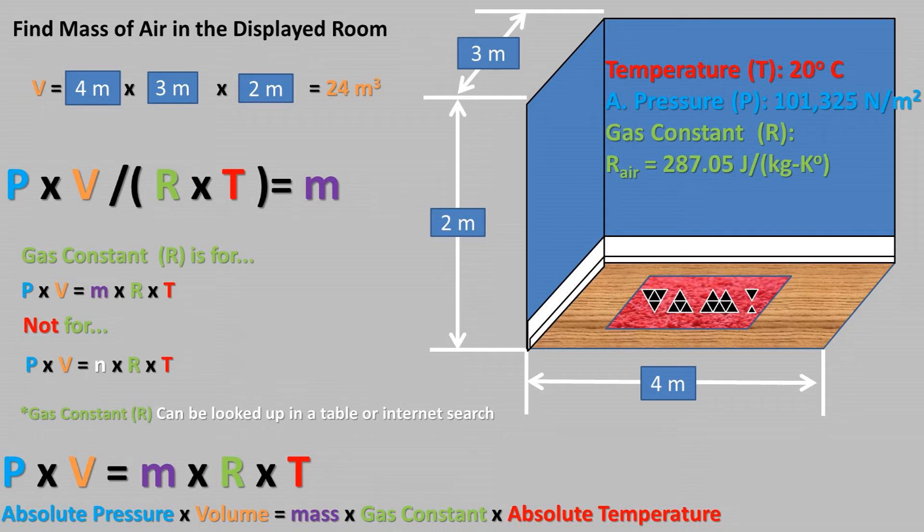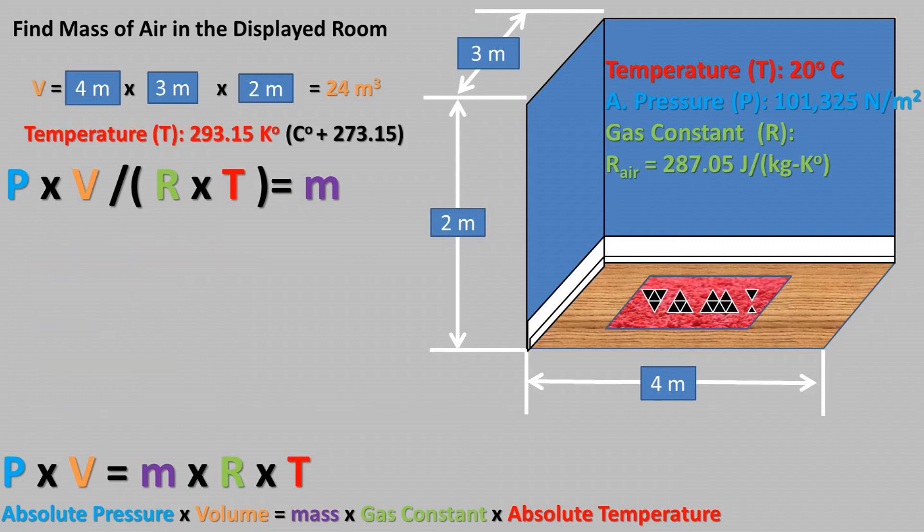We are using the gas constant shortcut for the mass version of the ideal gas law, so we don't have to do any changes to the gas constant. To get the temperature to the correct unit of Kelvin, we can add 273.15 to the Celsius measurement of 20 degrees. We get a temperature in Kelvin of 293.15 degrees Kelvin.